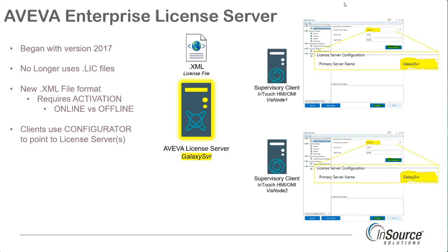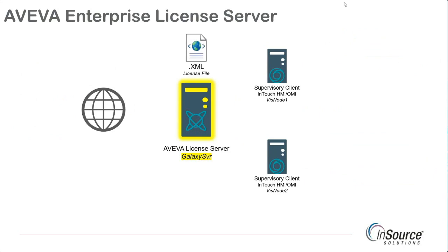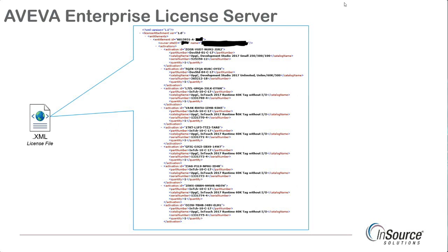We won't discuss the process of activation in this particular video. Our focus is much more on the content of an XML file versus activation. We do need to make sure that our clients are pointing to the right license server — keep this in mind, because once we have more than one license server after we have split our XML files, we need to make sure that our clients are pointing to the right one. We install the XML file onto the license server, it goes through the activation process, and then our clients are aware of the licenses being ready since they're pointing to the license server.